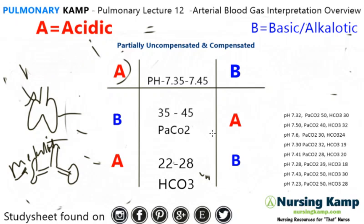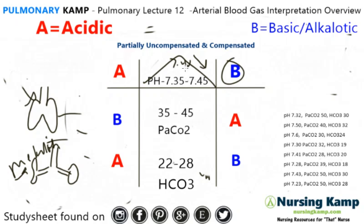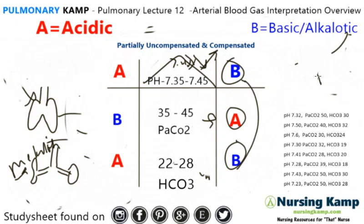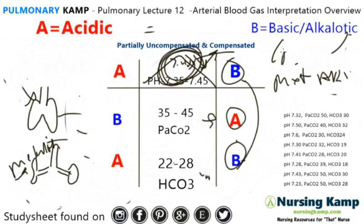Next: pH of 7.43 — we're in the middle. Since 7.43 is closer to the basic side but still in the middle, it's going to be a compensated blood gas. PaCO2 is 50 — definitely over on the acidic side — and bicarb is 30. So we have an alkalotic condition — a metabolic alkalotic condition. And because the pH is normal, it is compensated metabolic alkalosis.